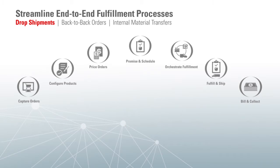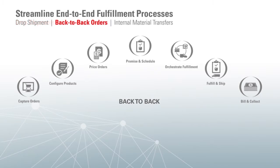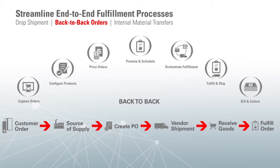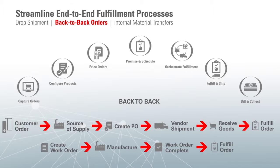Release 11 also supports back-to-back order fulfillment. Depending on your fulfillment strategies, manufacturing work orders, purchase orders, or internal material transfers are automatically created tied to your sales orders. You can monitor and track the progress of the supply step-by-step and know when the supply arrives into the warehouse and is ready to ship to the customer.